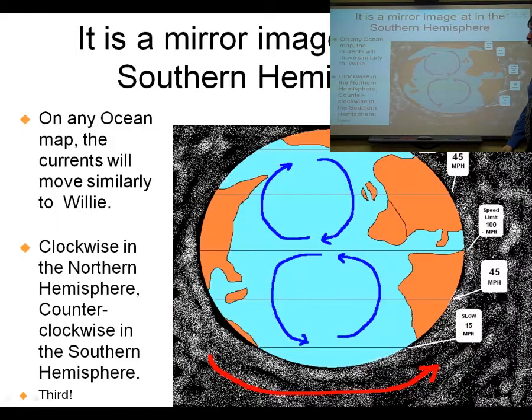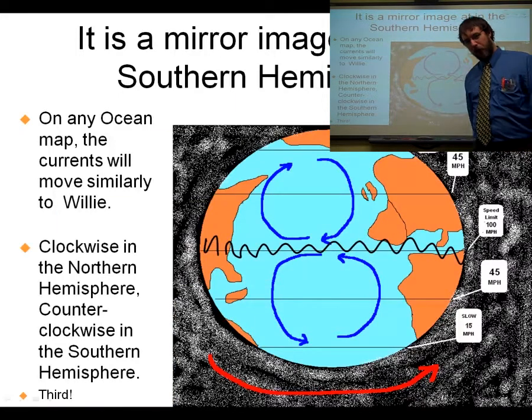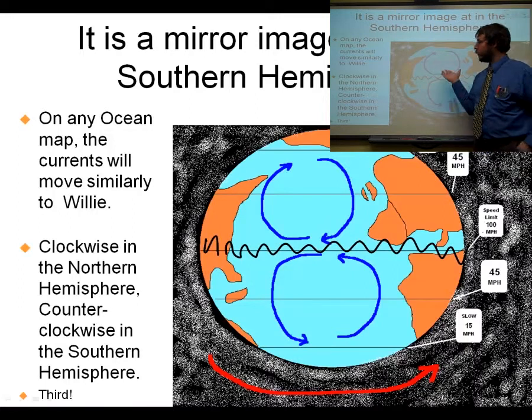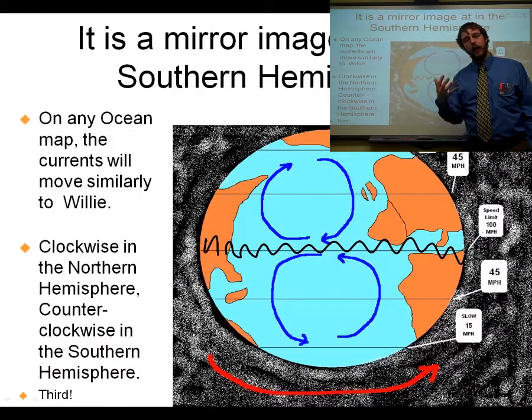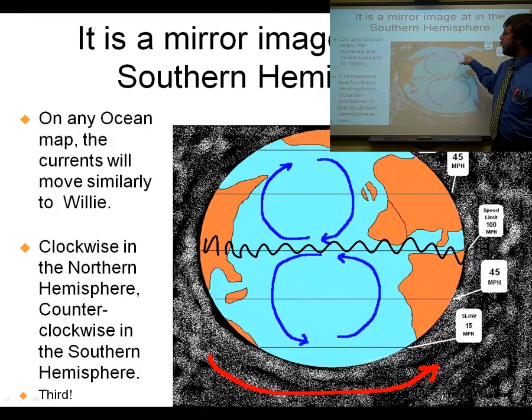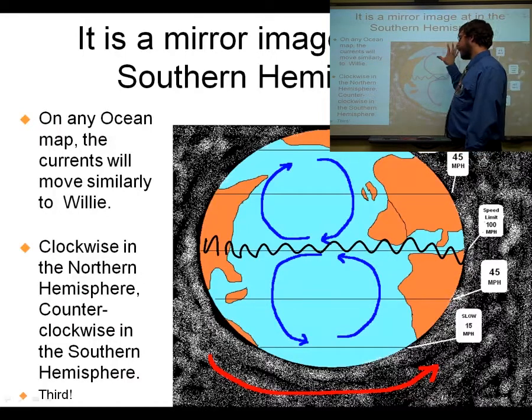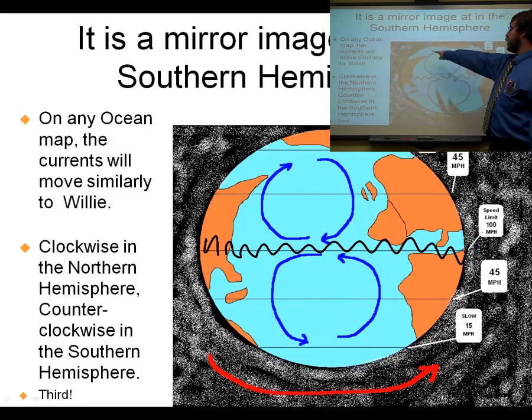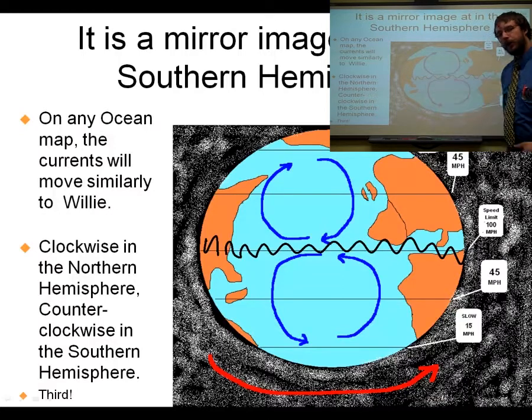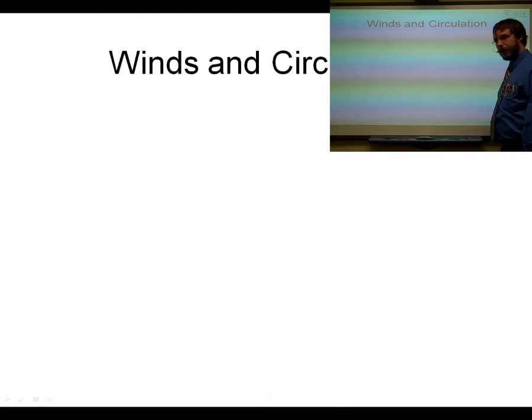Now what's really kind of fun is Willie, you know, being a fictional aqua-based character, actually is showing exactly the same way that the currents move in the ocean. So you end up with these major circulations going counterclockwise in the southern hemisphere, and going clockwise in the northern hemisphere. And again, that's due to the Coriolis deflection.